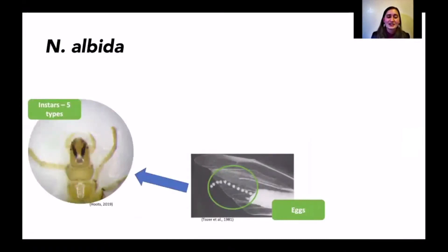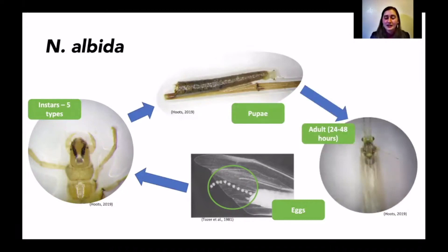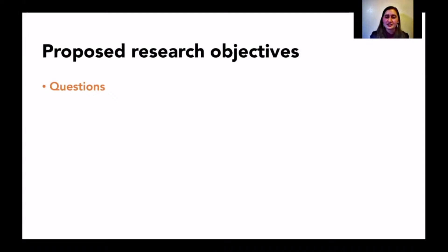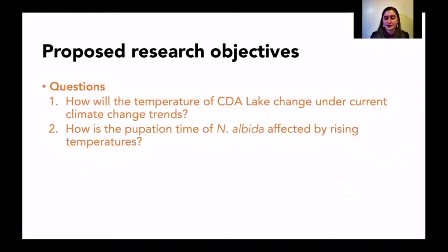Nectocyche albeta starts as eggs which hatch into larvae that grow through five instar phases. A fifth instar features the characteristic Nectocyche albeta V on its head capsule. Once they grow through their fifth instar, they pupate for about three weeks by retreating into their case, sealing themselves off, and fixing to a macrophyte. Pupae emerge into winged adults that live for about one to two days, during which time they mate, deposit eggs, and die. I studied Nectocyche albeta to answer: first, how will the temperature of Coeur d'Alene Lake change under current climate change trends? And second, how is the pupation time of Nectocyche albeta affected by those rising temperatures?